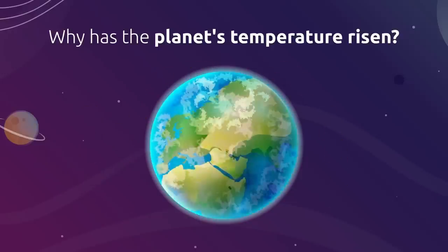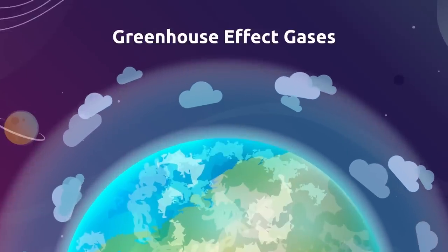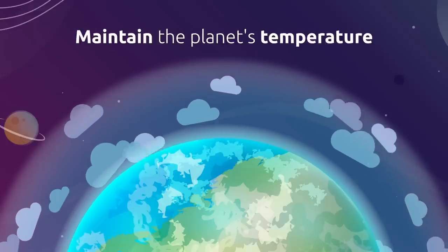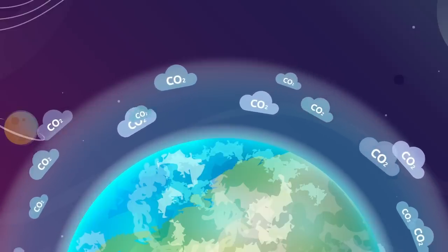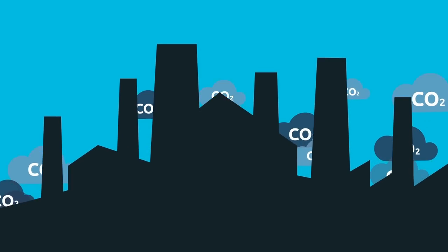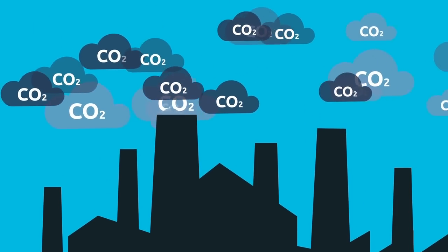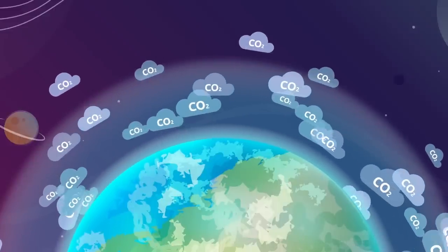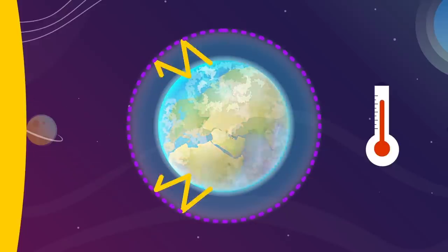But why has the planet's temperature risen? The earth is surrounded by the atmosphere, a thin layer of gas that allows part of the solar radiation to penetrate. This layer consists of gases called greenhouse effect gases, whose mission is to absorb part of the energy received and maintain the planet's temperature. One of the main greenhouse effect gases is CO2. With the industrial revolution, CO2 emissions started to increase due to the use of fossil fuels like coal and petrol. Over the years, the increased presence of CO2 in the atmosphere has enhanced its capacity to retain solar radiation, resulting in a rise in the planet's average temperature.